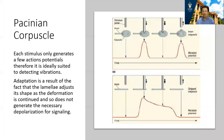That ability to adapt rapidly is a property of the fluid-filled lamellae that surround the ends of the nerve. This diagram demonstrates that. When a stimulus is applied to the Pacinian corpuscle, you get a response. But even though the stimulus is present, adaptation takes place very quickly and the response disappears. When the stimulus is removed, the same thing happens — a response that disappears very quickly. In experiments where the lamellae have been removed, it turns the Pacinian corpuscle from a fast-adaptive receptor to a slowly-adaptive receptor.